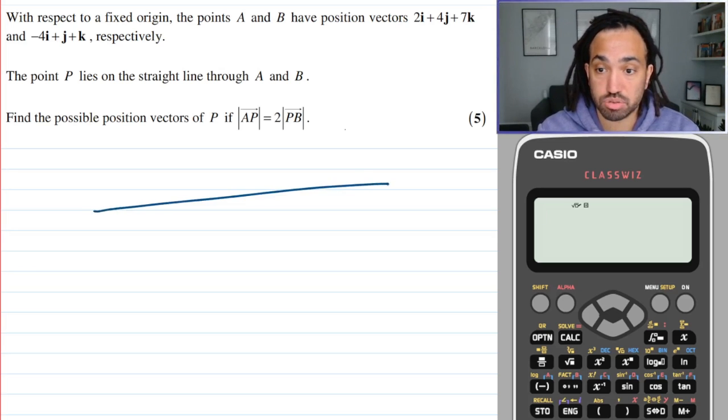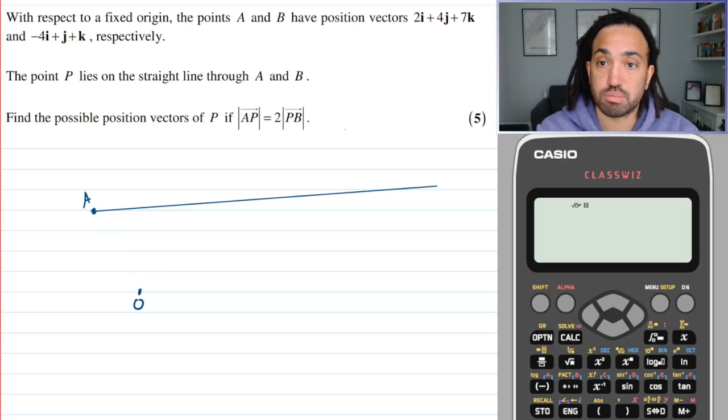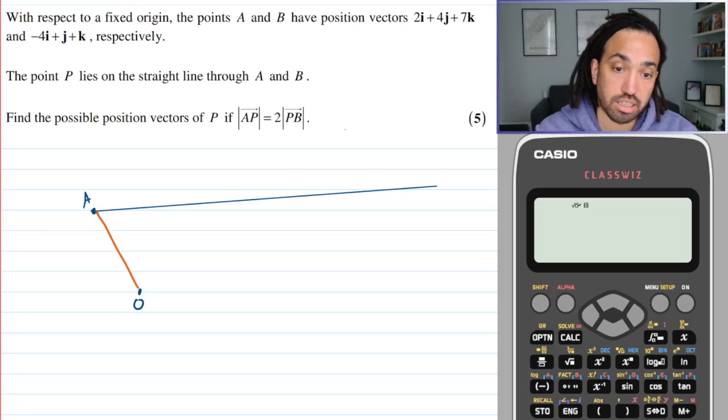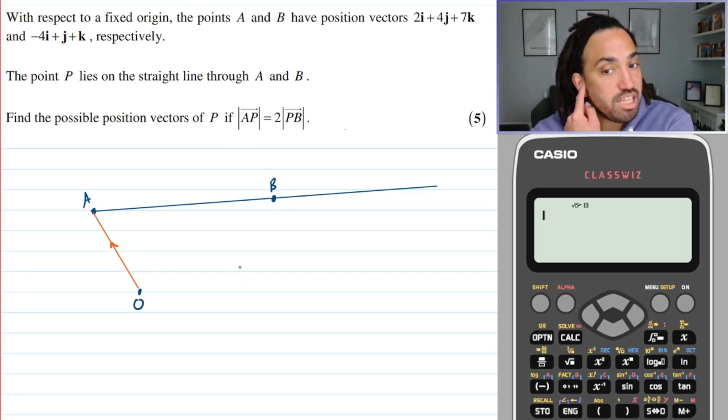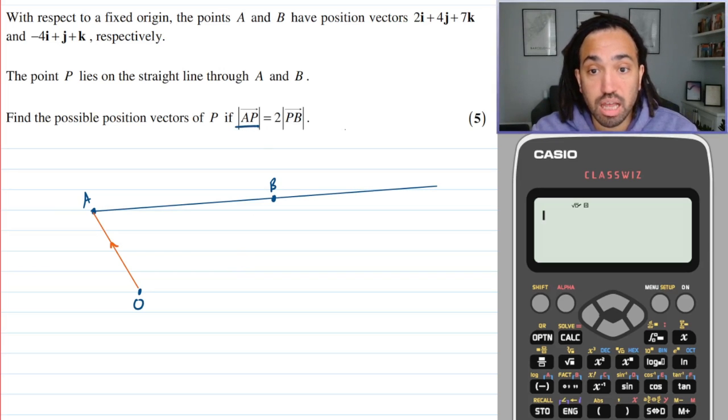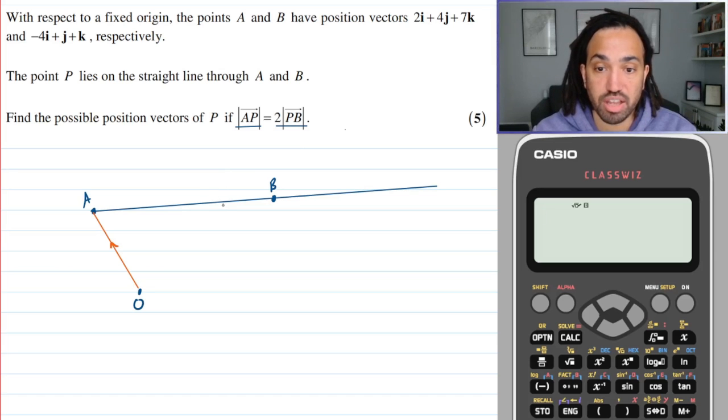So first thing I'm going to do is just draw a straight line like this. I'm going to call my origin here and let's imagine that A is this point here. Okay, so I can draw my position vector would look like this. Okay, and then what we need is we need for P to be placed such that, let's say we have B here, we need P to be placed so that the distance from A to P is equal to two times the distance from B to P. So it's got to be much closer to B than to A.